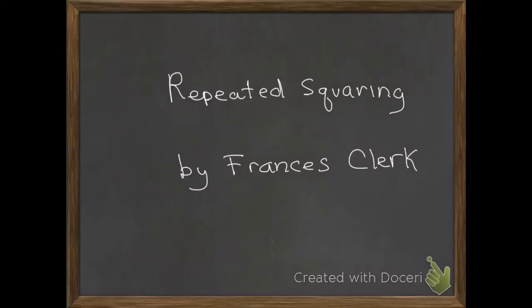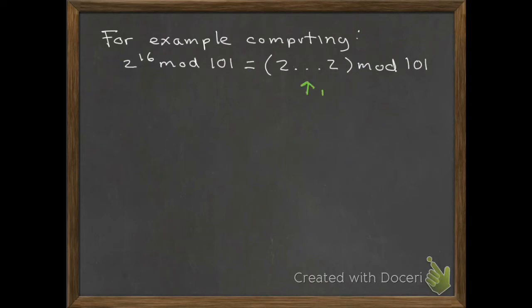This is a short video about the technique of repeated squaring. For example, if we wanted to compute 2^16 mod 101, we would have to multiply 2 times 2 times 2, write that out 16 times, and make 15 multiplications mod 101.